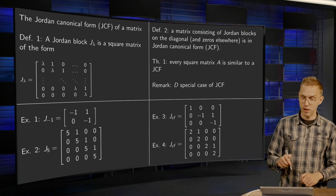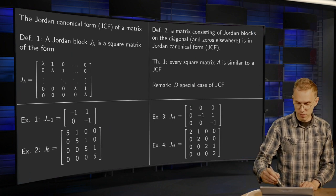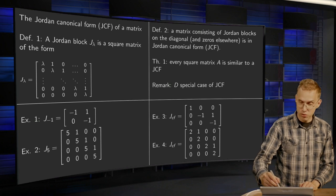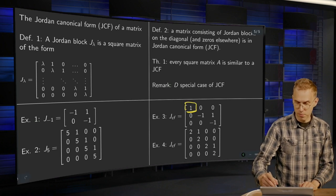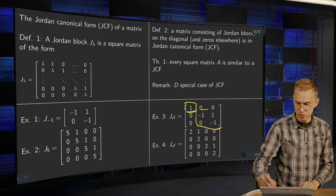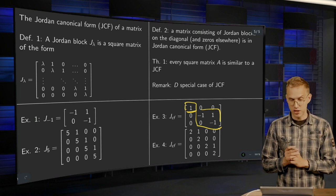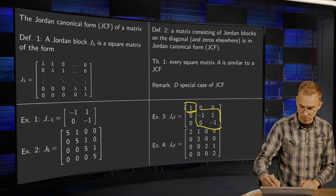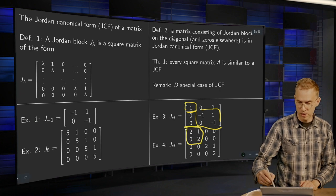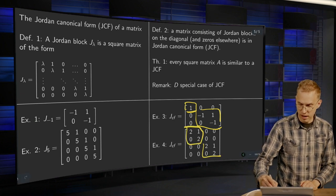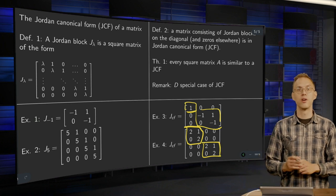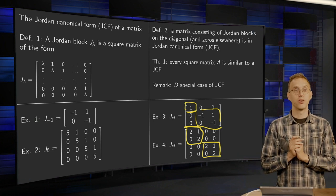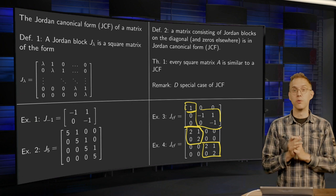So let's take a look at a few examples. Here we have a Jordan canonical form with two Jordan blocks. Here the first 1x1 block, and here the second 2x2 block. So that is an example of a Jordan canonical form. And here we have another example. Here we have one Jordan block and here we have another Jordan block. So there we have an example of a Jordan canonical form with two Jordan blocks.